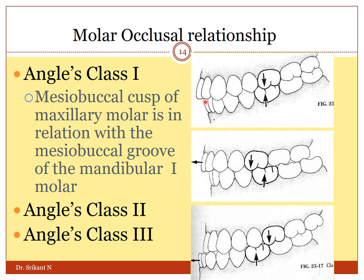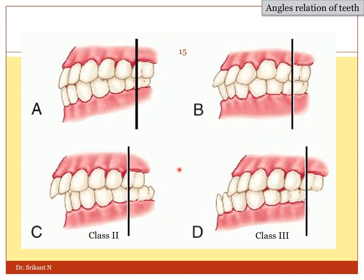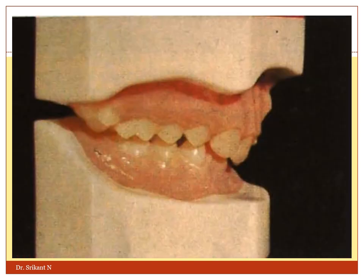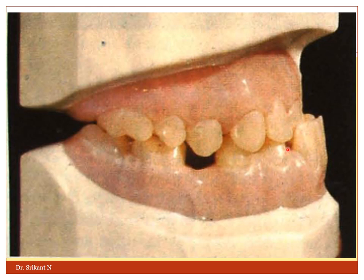This horizontal overlap of 2 to 5 millimeters is called overjet. In Angle's Class 2 and Class 3, the mandibular relationship is different. In Class 2 position, the mandibular teeth are more posteriorly placed than the maxillary teeth, and the overjet is more. In Class 3, the mandibular teeth are anterior to the maxillary teeth, and the overjet is reversed wherein the mandibular teeth are ahead of the maxillary teeth. This is a typical example of Class 2 malocclusion where the maxillary teeth compensate by outgrowing and covering the mandibular teeth completely. This is an example of Class 3 wherein the mandibular teeth are placed ahead of the maxillary teeth.